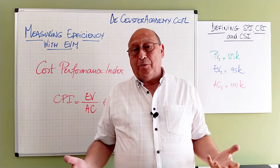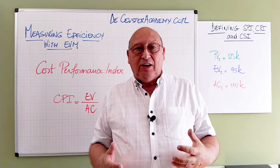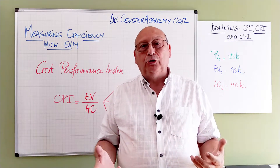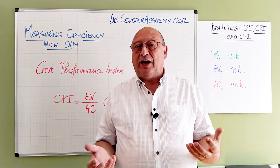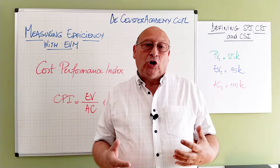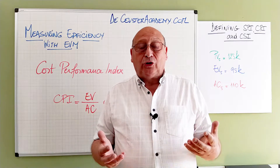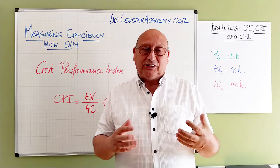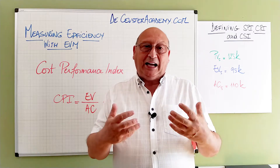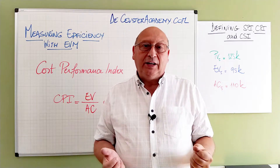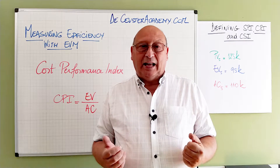The second performance index we are defining is the cost performance index. Here we are going to see how well we are dealing with money — how well are we producing the deliverables? Each time we create a deliverable, we earn the value of that deliverable, which is the cost we estimated during planning to create it. The second thing we look at is how much did we really pay to create that deliverable. We want to see how efficient we are spending the money — when spending more, my actual cost would be higher than the value I earn, meaning I'm not working efficiently.